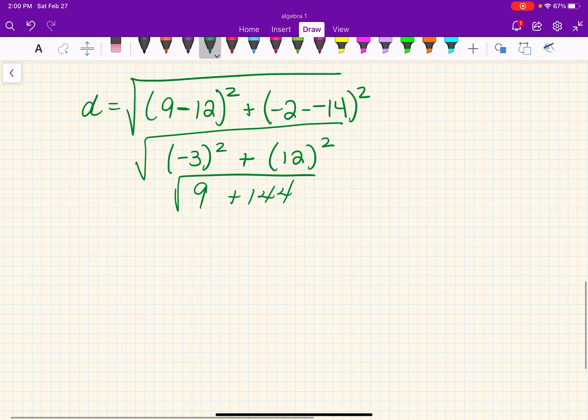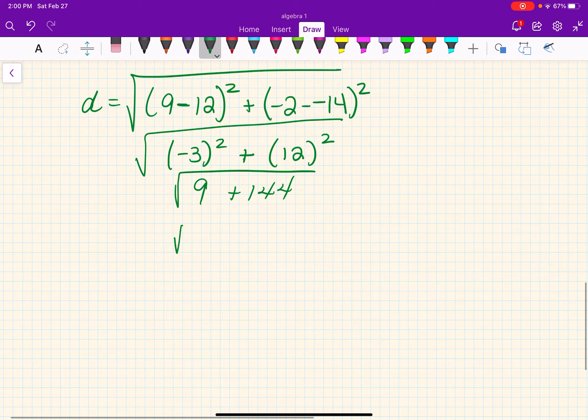So that's really 9 and 144. 9 plus 144 is going to give you the square root of 153. And when I first did this problem, I thought I was done. I'm not. I went and looked at it with divisibility rules. And 153 is divisible by 3.